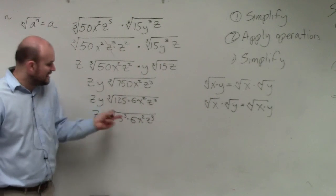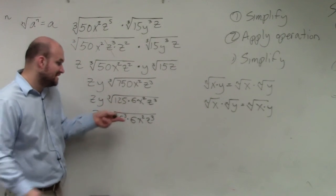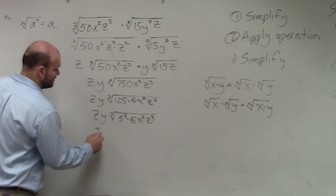I'm just writing a lot of extra steps, just again to take this slow. 5 cubed times 6x squared z cubed. The reason why I wanted, I just did an extra step, because remember, guys, the cube root of 5 cubed is? 5. 5.